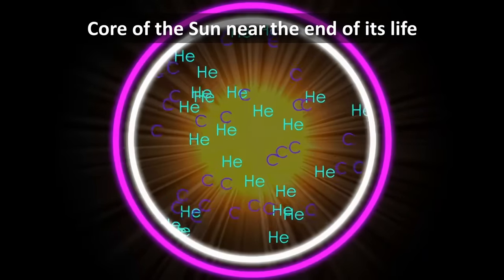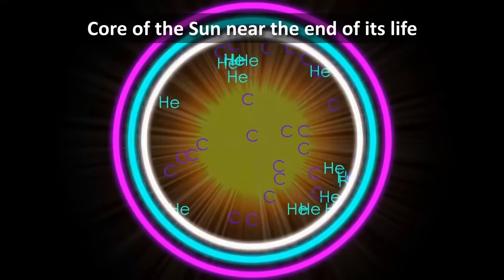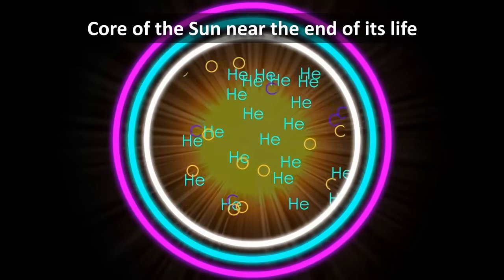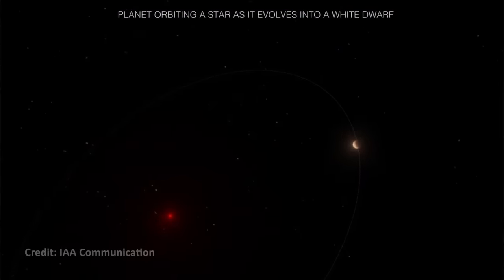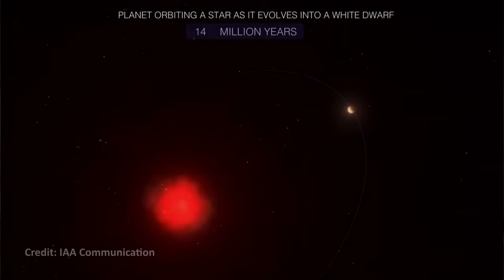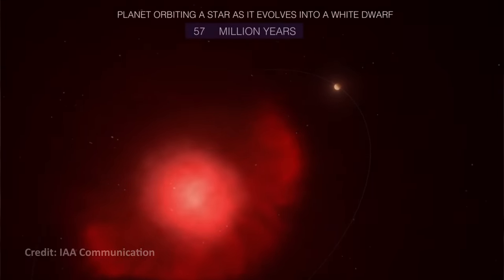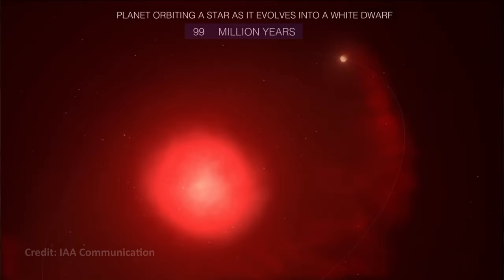Its inner layers start to collapse, which squishes the core, increasing the pressure and temperature in the core of the star. While the core collapses, the outer layers of material in the star start to expand outward. The star expands to larger than it's ever been, a few hundred times bigger.